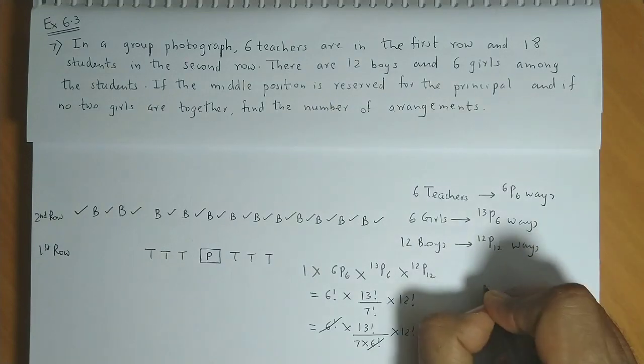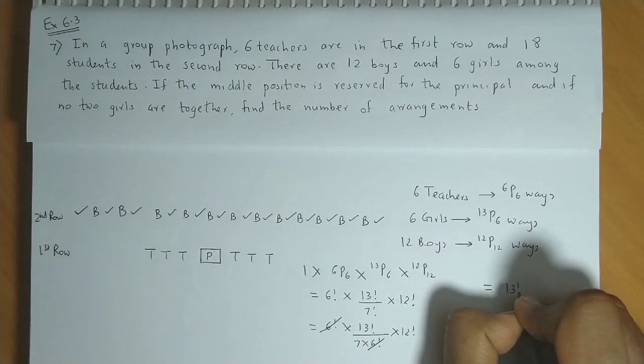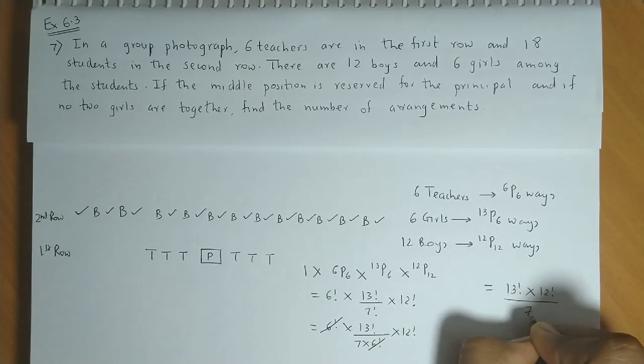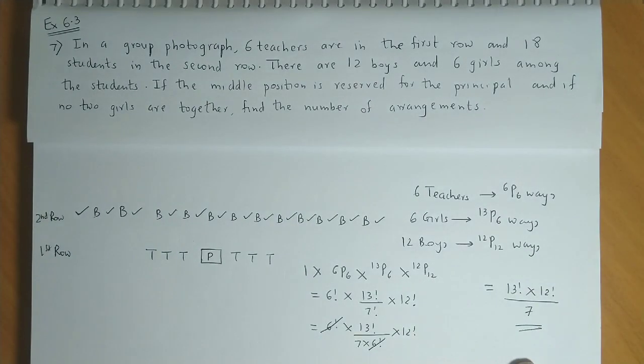Now, 6 factorial, 6 factorial cancel ho jaata hai. And we have the answer as 13 factorial into 12 factorial divided by 7.